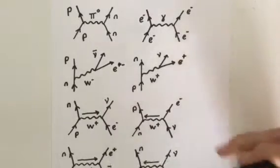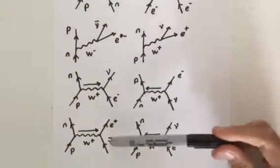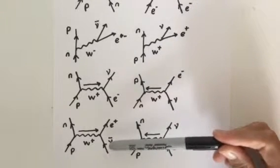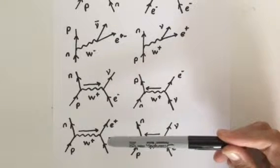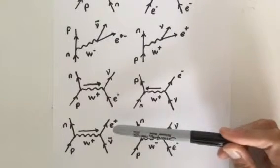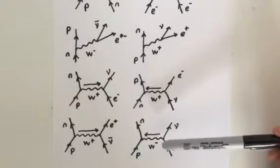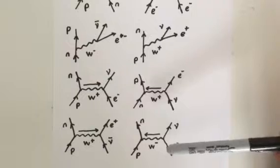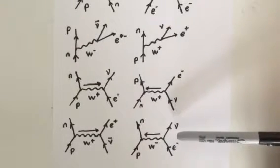Diagram 7 represents an anti-neutrino proton collision. A proton absorbs an anti-neutrino and emits a neutron and a positron. Finally, diagram 8 represents an electron-proton collision. They collide and emit a neutron and an electron neutrino.